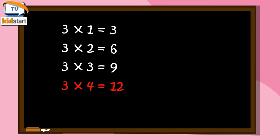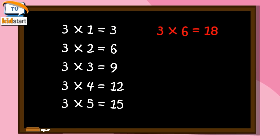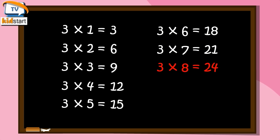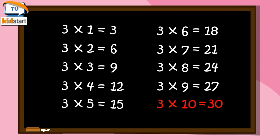Three Fives are Fifteen. Three Sixes are Eighteen. Three Sevens are Twenty-One. Three Eights are Twenty-Four. Three Nines are Twenty-Seven. Three Tens are Thirty.